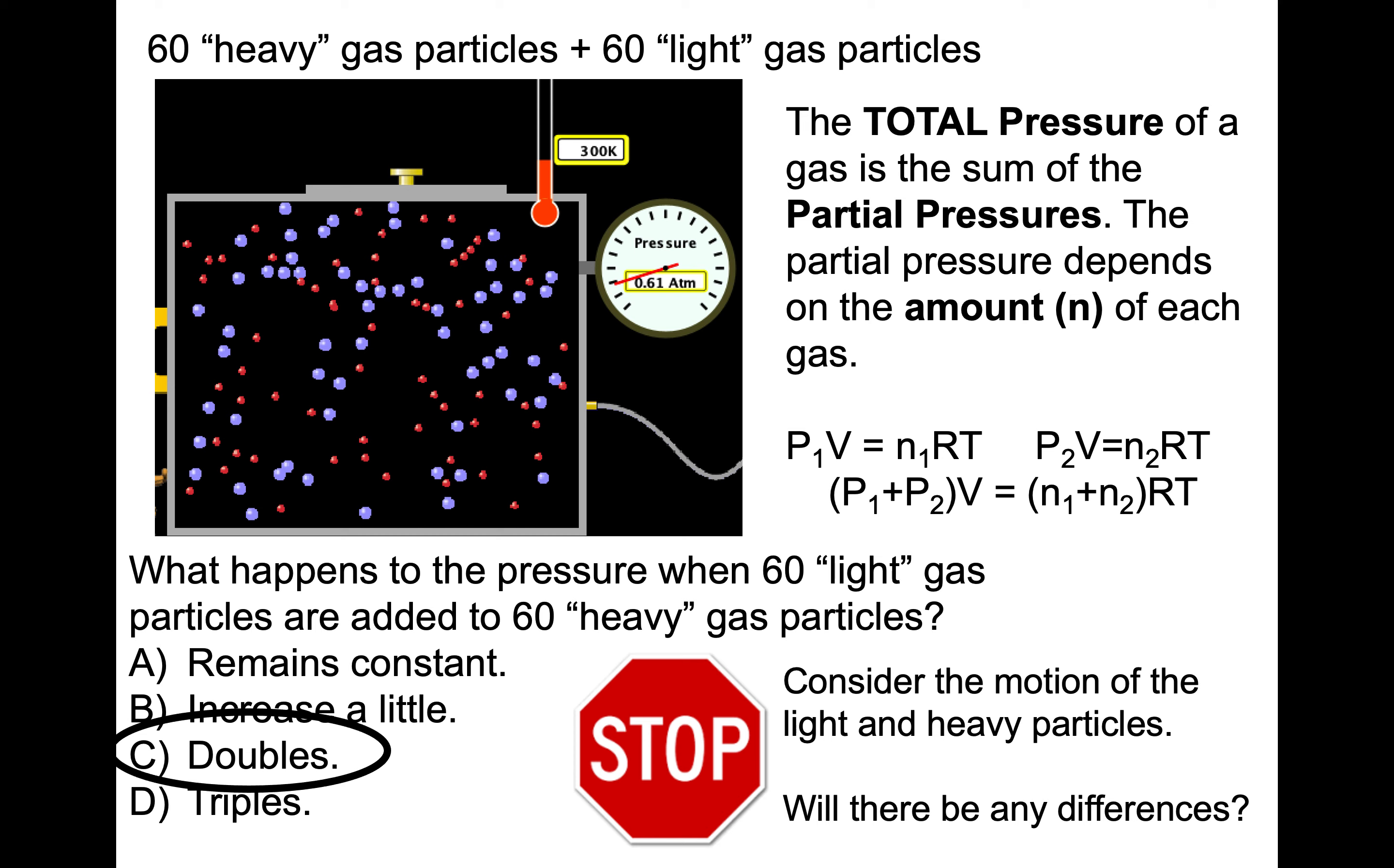So if one's considering the motion of these light and heavy particles, do you predict there will be any difference? How will they be similar? How will they be different? Will they be different in any way? What are your thoughts when we're comparing these heavy and light gas particles using the kinetic molecular theory?